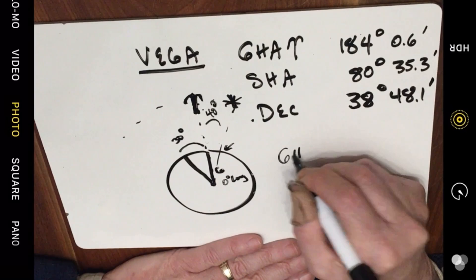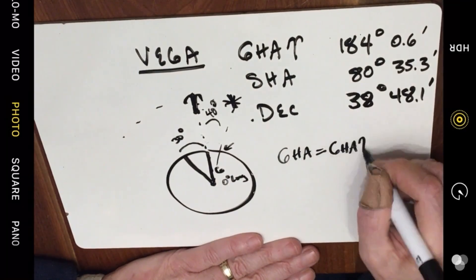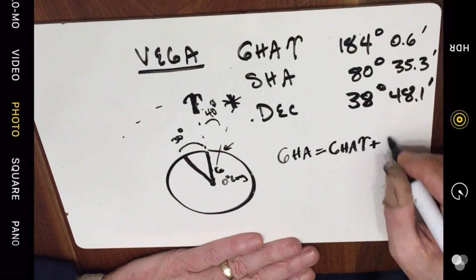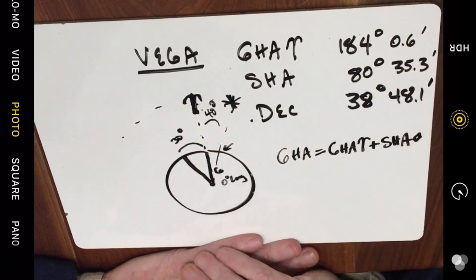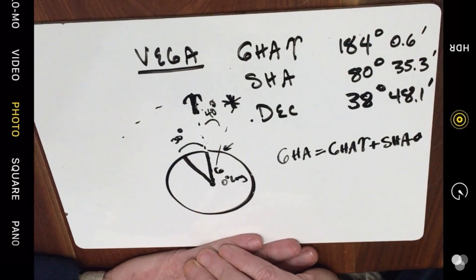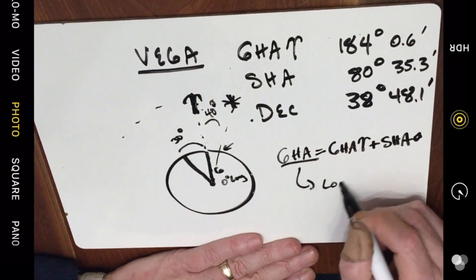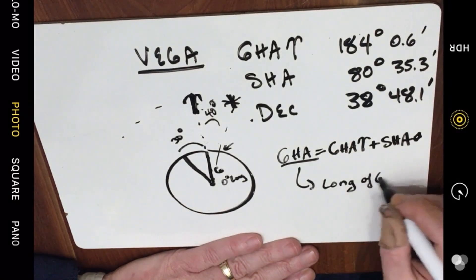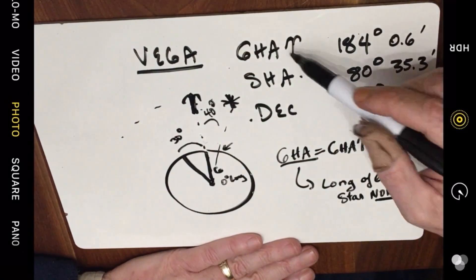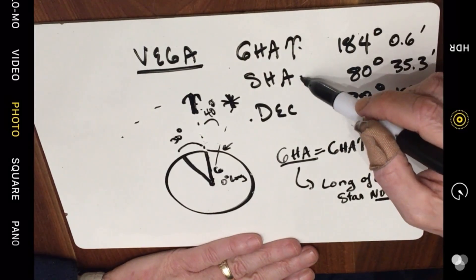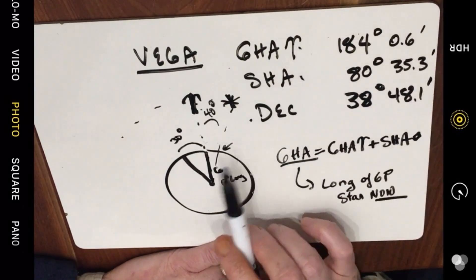So the Greenwich Hour Angle of the star equals the Greenwich Hour Angle of Aries plus the Sidereal Hour Angle of the star. The Greenwich Hour Angle will give us the longitude of the geographic position of the star. The Sidereal Hour Angle between Aries and the star does not change, but the Greenwich Hour Angle to Aries does change as the Earth rotates.